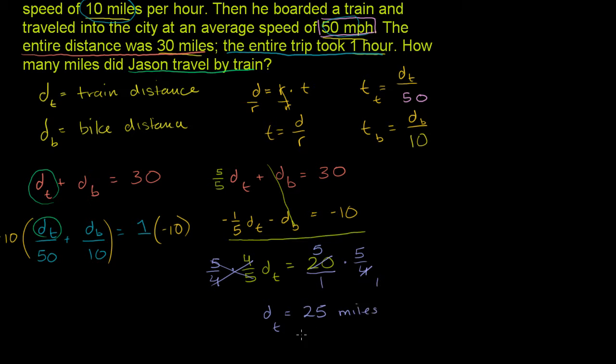And we're done. We could go back to find the other values too. Since the distance by train is 25 miles, the distance by bicycle must be 5 miles — since they have to add up to 30 miles.